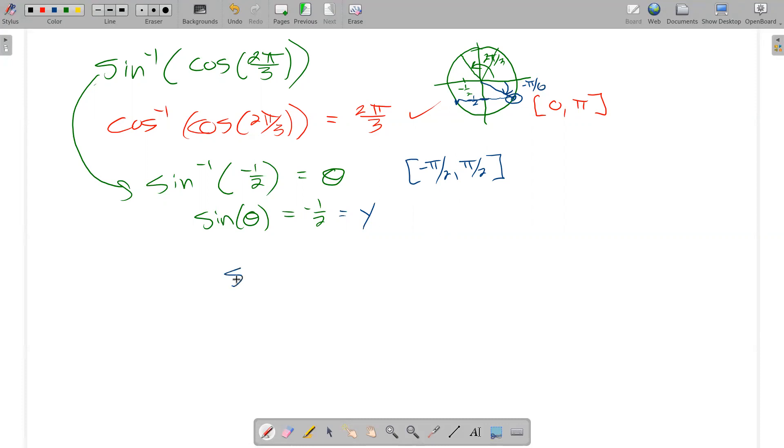So, I should find that the sine inverse of negative 1 half is the angle negative π over 6, because I know that the sine of negative π over 6 is negative 1 half, and this would be a good thing to check on a calculator.